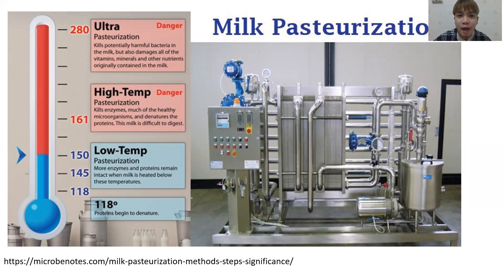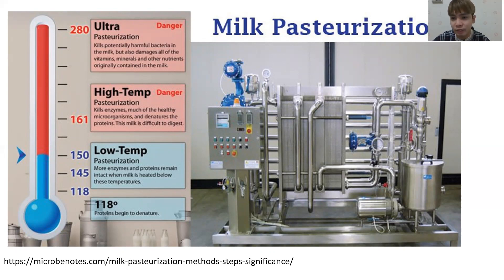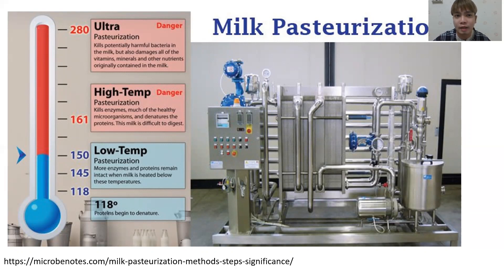High Temperature Short Time (HTST) kills the enzymes in the milk, and also kills much of the healthy microorganisms in the milk, and could denature the milk protein. For Ultra High Temperature (UHT) pasteurization, it kills harmful bacteria — a majority of the bacteria — so the lifespan of this milk is longer compared to HTST and LTLT.